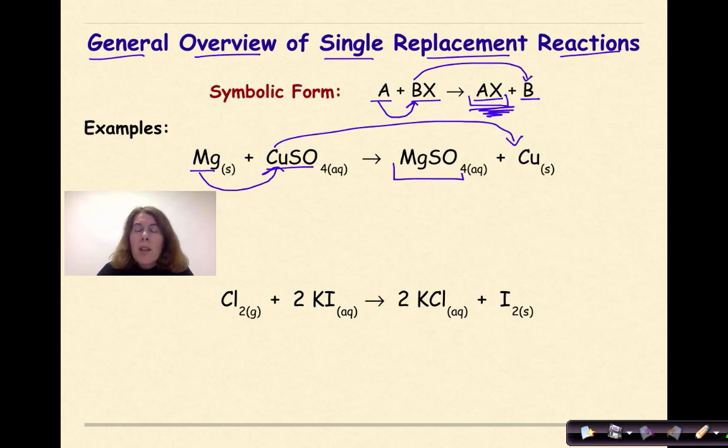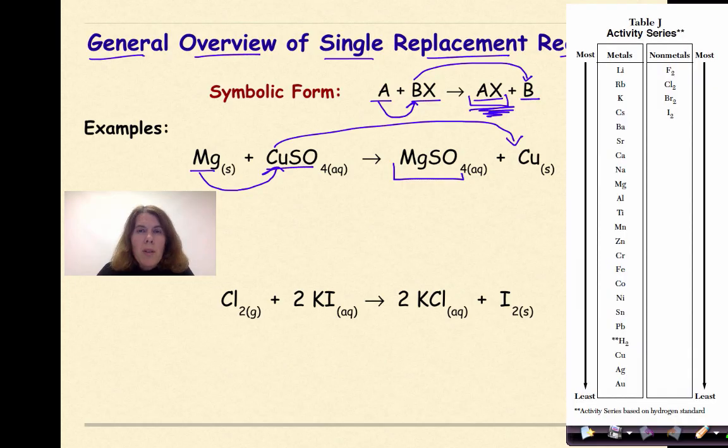If we were to look at this from a perspective of a non-metal, again we'd go to table J, and we would find chlorine. And we would see, can chlorine replace iodine? And we see that it can.